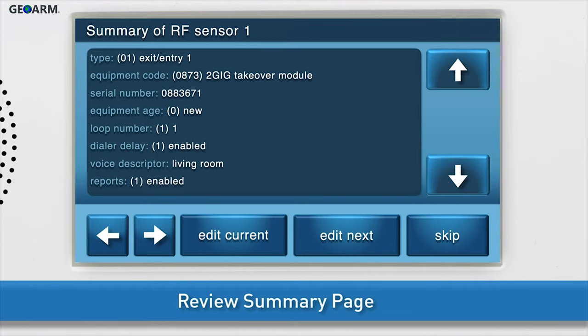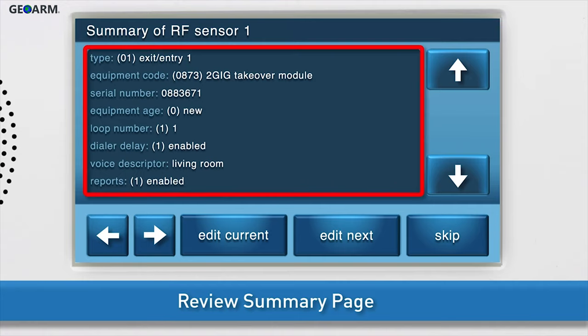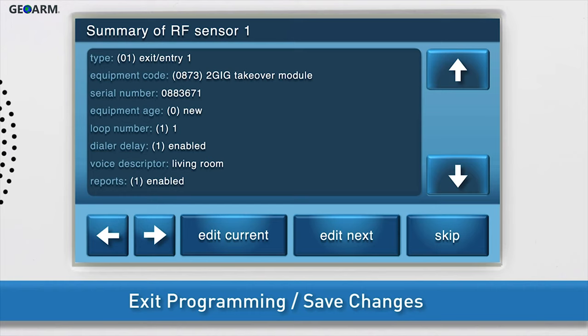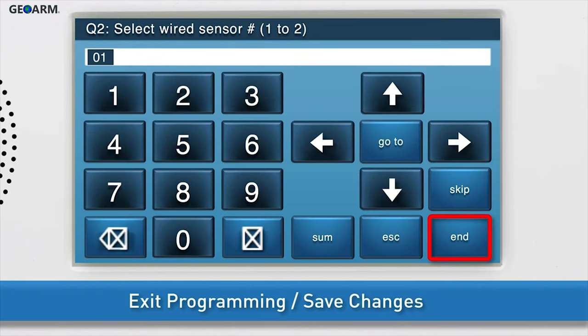Review the summary page to ensure all information is correct. Review all answers. If you need to edit any of the information, press Edit Current. To exit programming mode and save your changes, press Skip. Then press End.